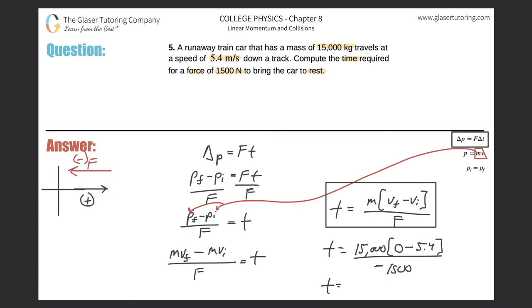So we got 15,000 times 5.4, all divided by 1500, and we get a value of 54. So the time would be 54 seconds it would take to come to rest.